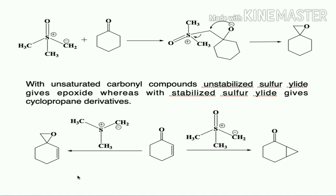The key distinction: if there is no unsaturation adjacent to the carbonyl group, both stabilized and unstabilized sulfur ylides give epoxide. If there is a double bond adjacent to the carbonyl group (an electron-withdrawing group), unstabilized sulfur ylides give epoxide whereas stabilized sulfur ylides give the cyclopropane derivative.